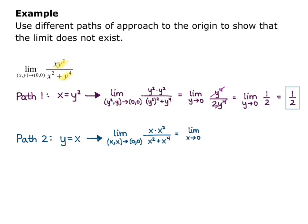This is equivalent to the limit as x approaches 0 of x³ over x² + x⁴. And this is equal to the limit as x approaches 0 of x³ over, and in the denominator I'm going to factor out x², so I get 1 + x² left over in the denominator.